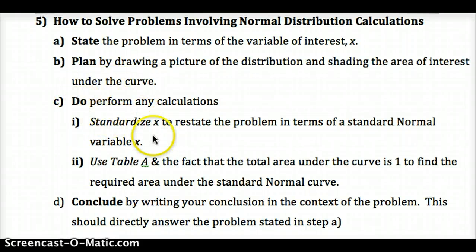Do: perform any calculations. Figure out your z-score, standardize x which is the z-score. Use that z-score and table A to figure out the total area, and the fact that total area under the curve is 1, to figure out what is the area that you're interested in. Then conclude by answering the question of interest. You're directly answering the question we're trying to address with this whole problem, in terms of the problem, citing your data from your calculations.